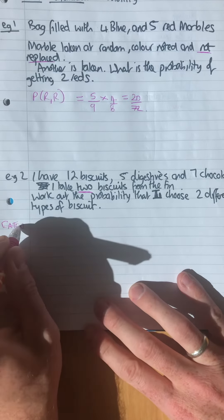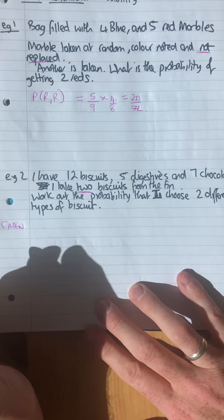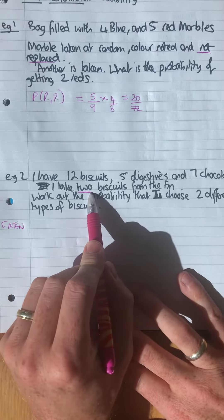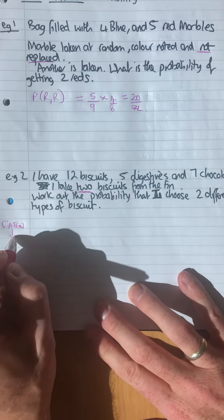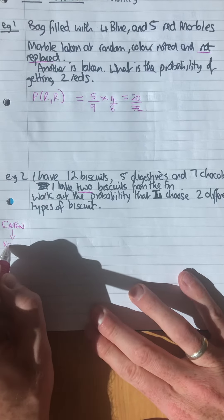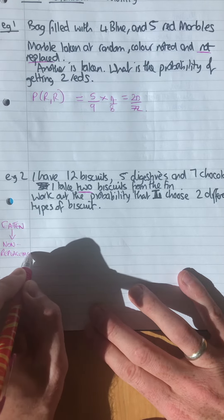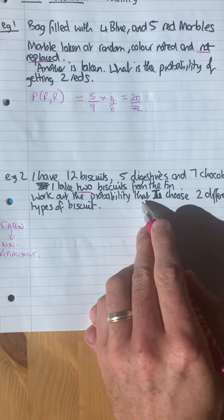So obviously if you eat a biscuit you can't replace it, so you assume that's eaten or it's non-replacement. If it's eaten, you assume non-replacement.